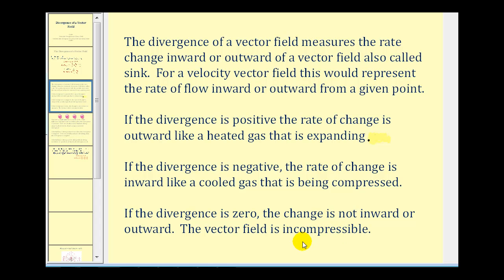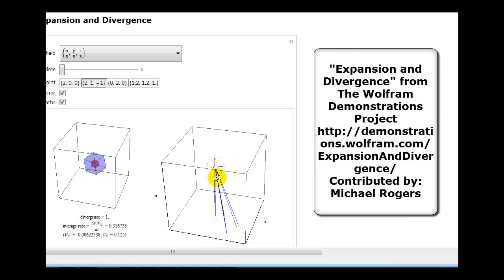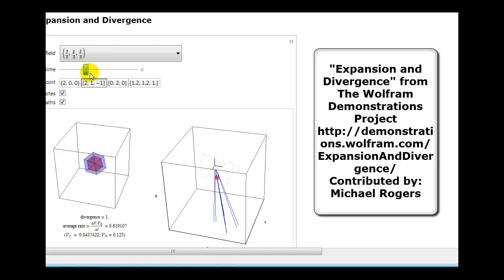Let's look at an illustration of divergence. A little red box will take the path along these blue lines. Since the divergence here is equal to one, or positive, the volume of this box is going to expand or increase along this path through the vector field. You can see as it takes the path, the volume of the red box is expanding. This is what it means to have a positive divergence.